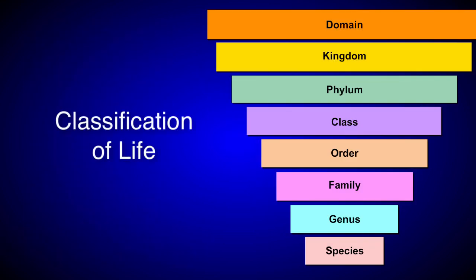Scientists classify all living things in a similar manner. They're organized into different groups based on similarities between their lineage, physiology, and genetic makeup.